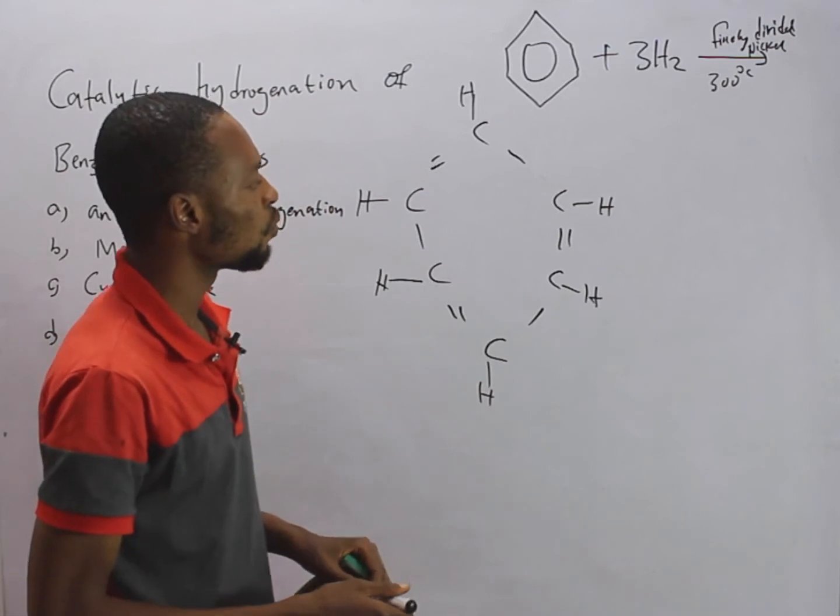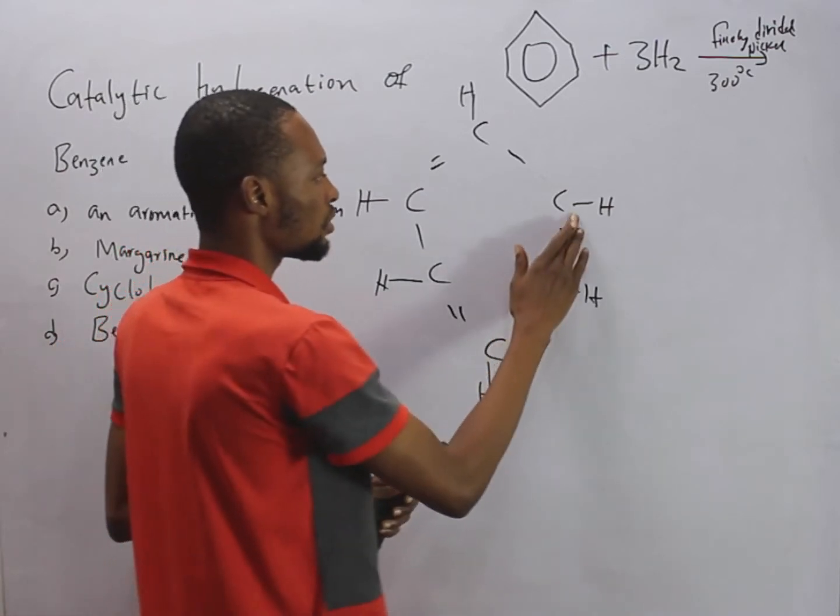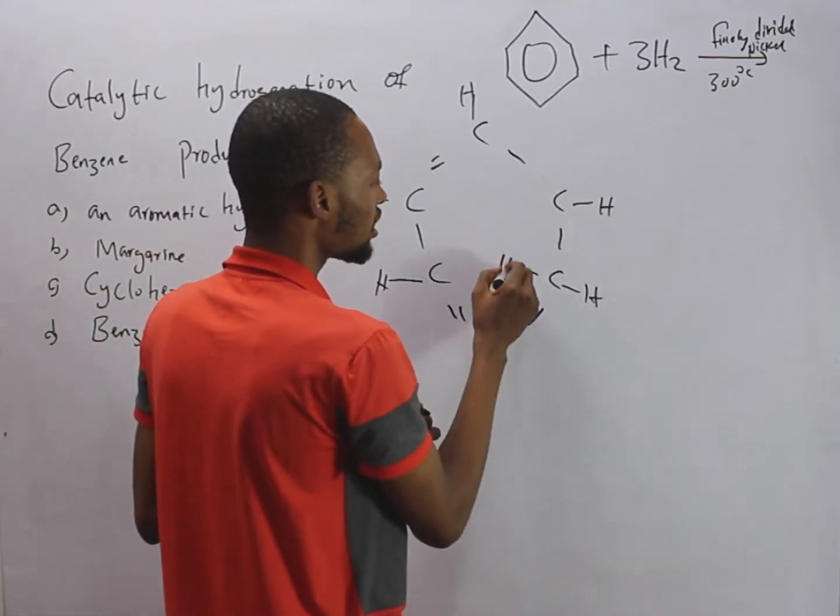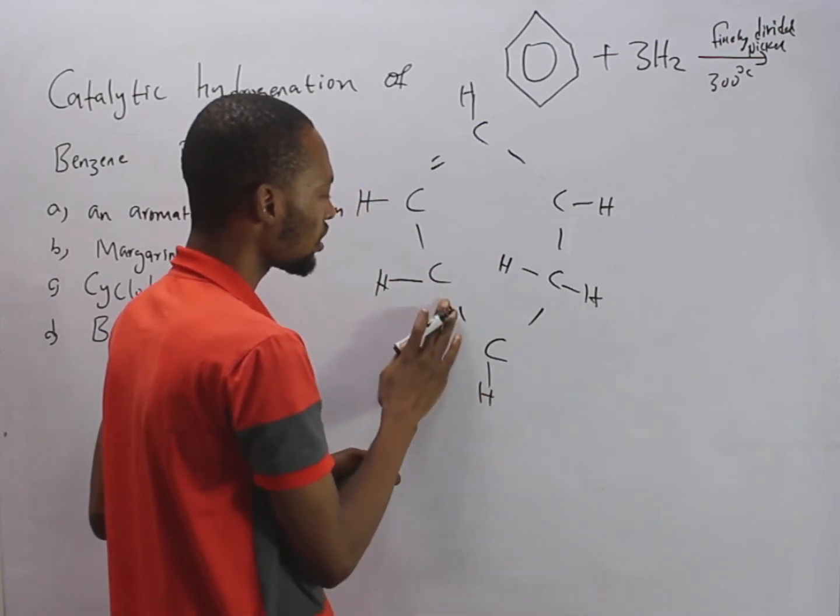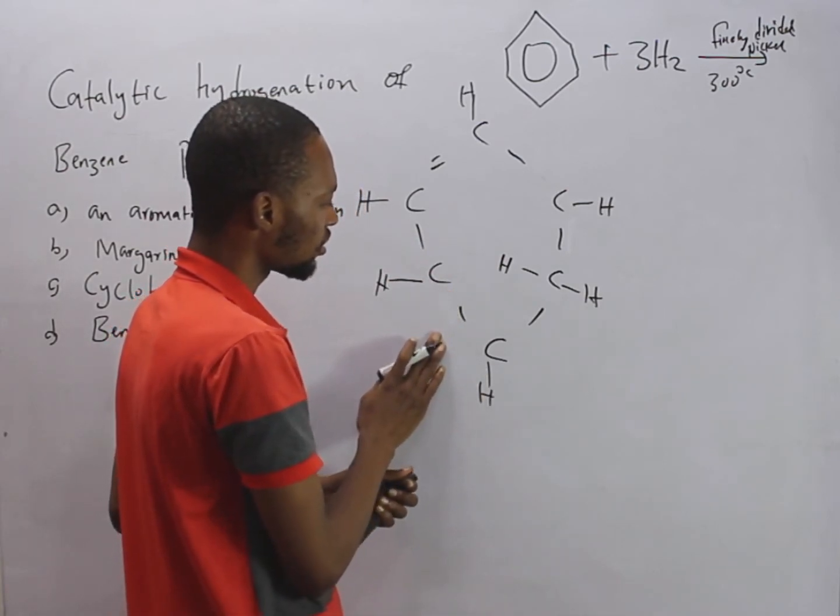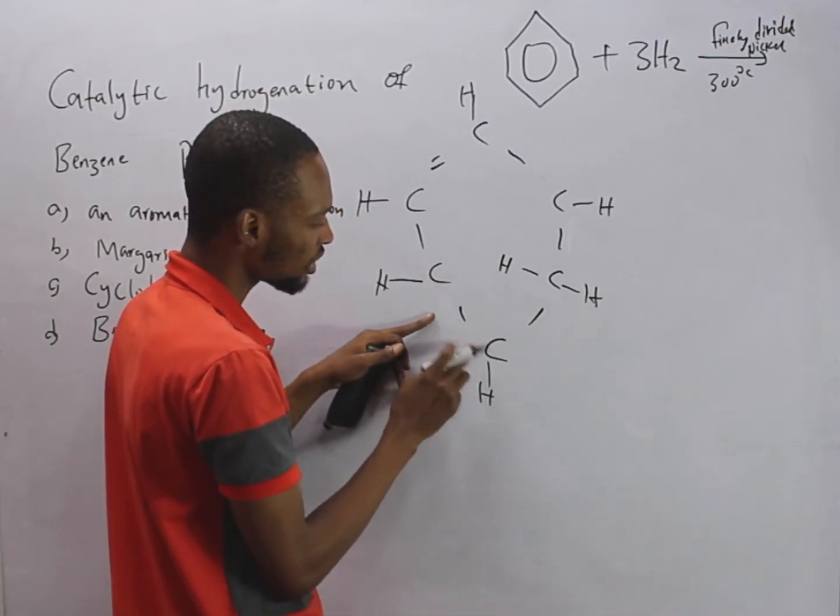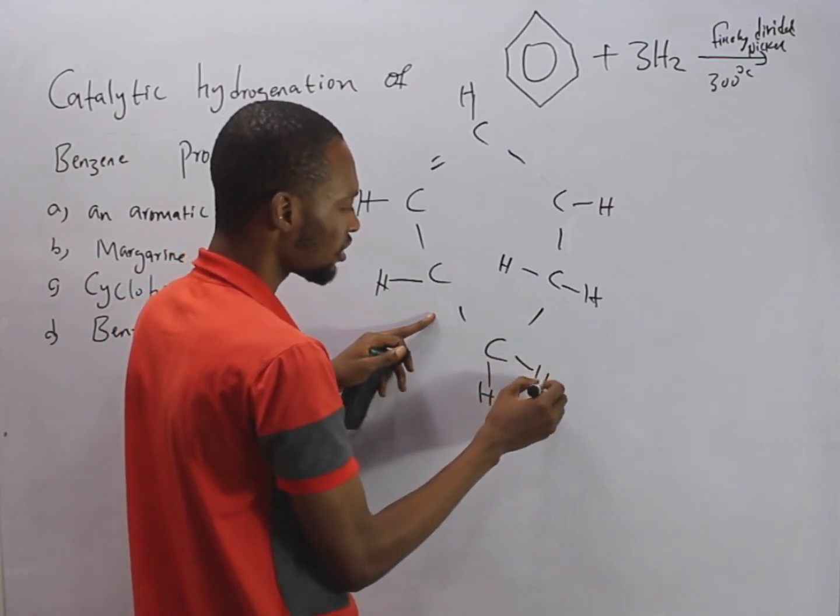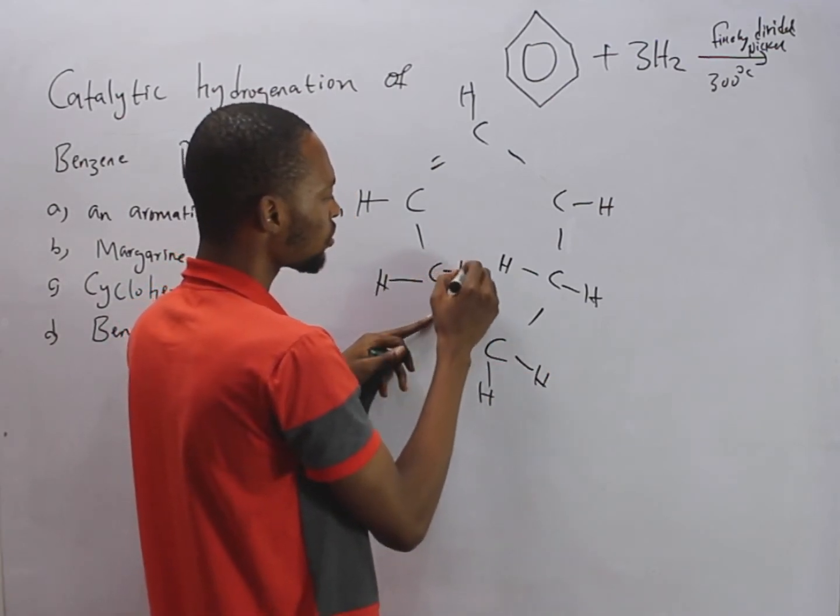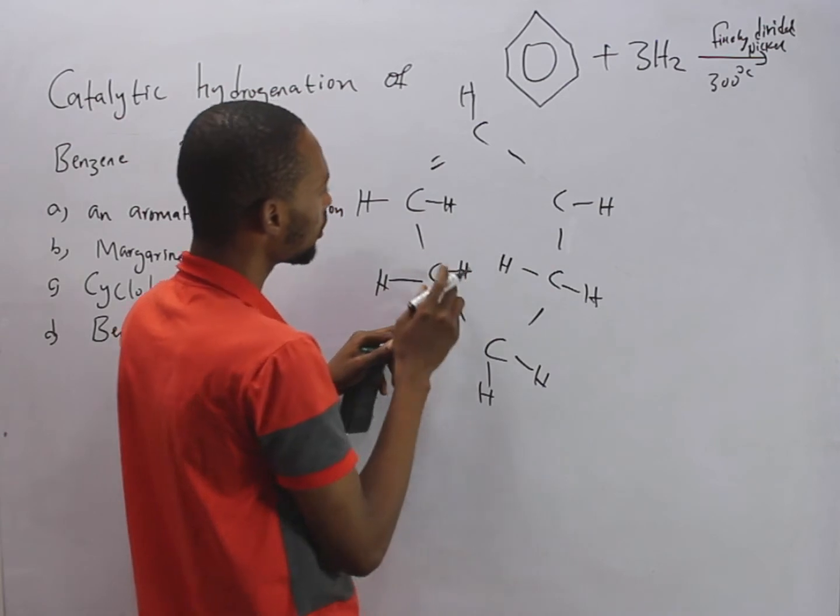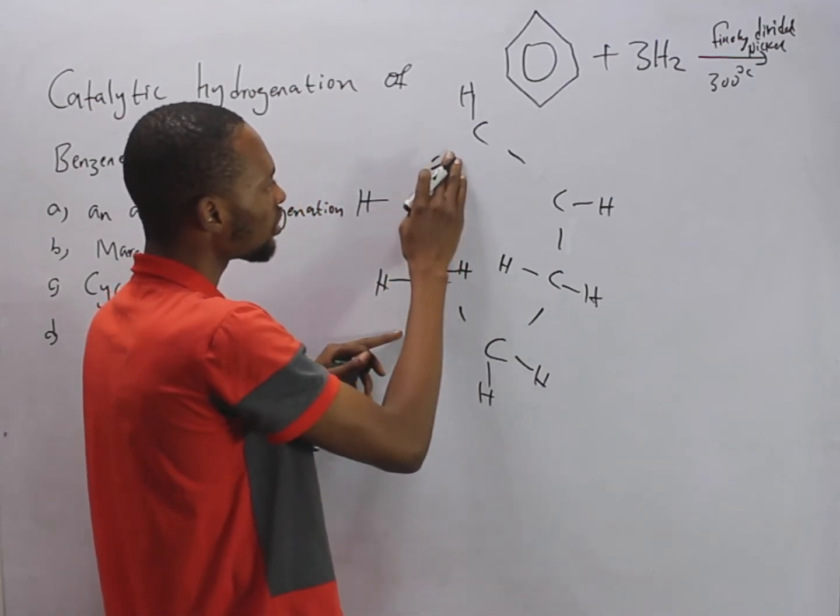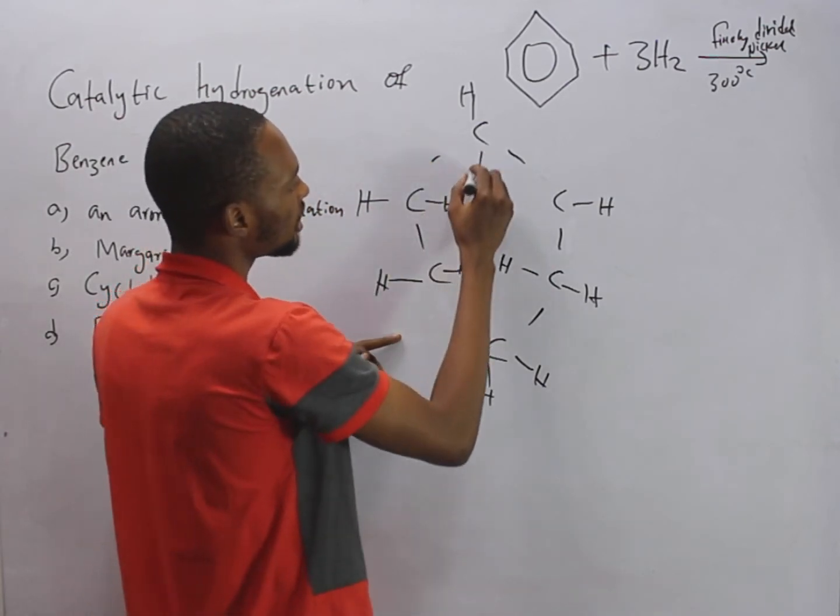This means that one of the hydrogen will break here. So you form one H here. One of the bond here will break. So meaning here will not be three bond. One, two, three. So here will be one, two, three. Another one will break here. So here will not have another hydrogen.